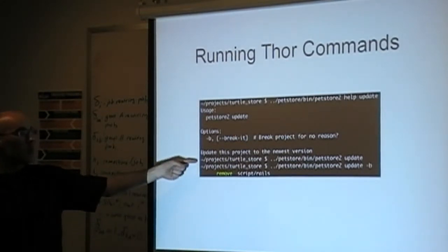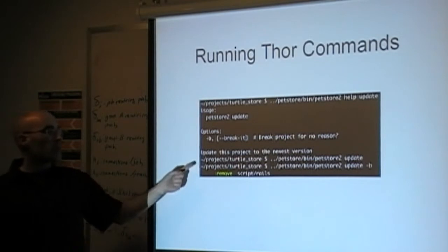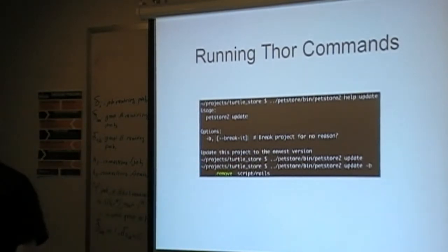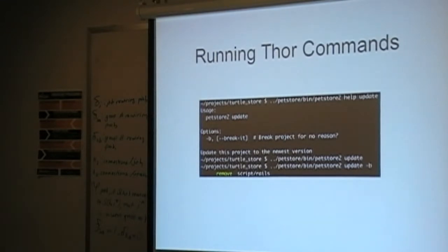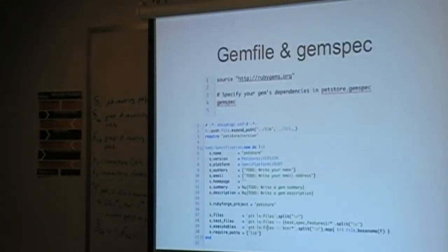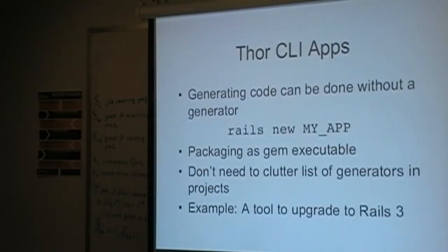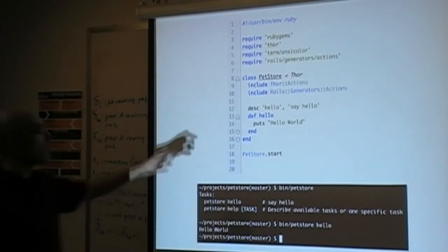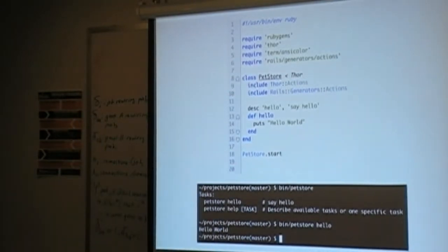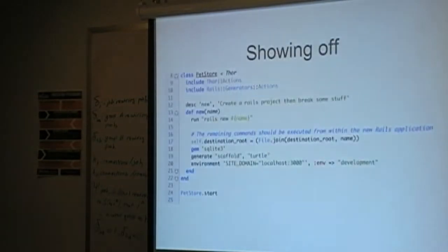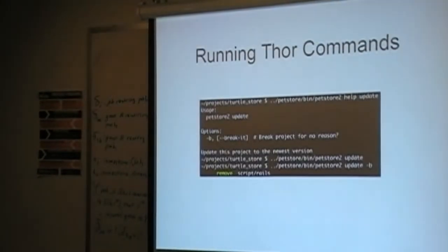I've run the update command twice: with no option it does nothing, and then with the dash-B option you can see it's removing the script/rails file from the project. You can also use syntax highlighting — a lot of Rails 3 stuff is starting to take advantage of that. You can use it in your own project by using the 'ansi_color' term to make arbitrary strings red as part of your command line output. Rails depends on that as well, so it's something you'll probably have for most Rails 3 projects.